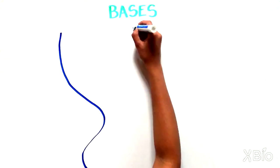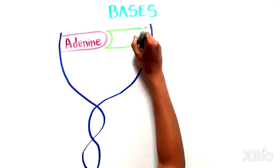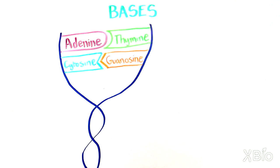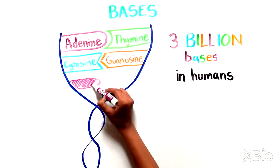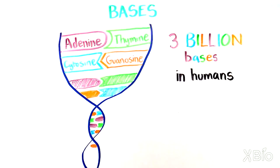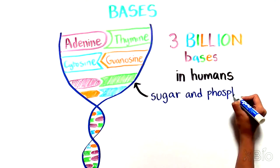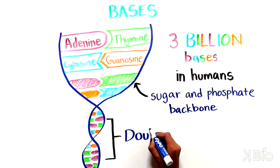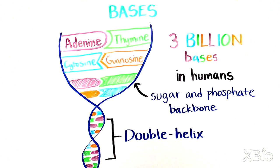It is made of smaller units called bases. These are the famous A, T, C, and Gs, 3 billion of them strung together on a backbone of sugar and phosphate. The DNA is organized in two strands that fit together in a double helix.